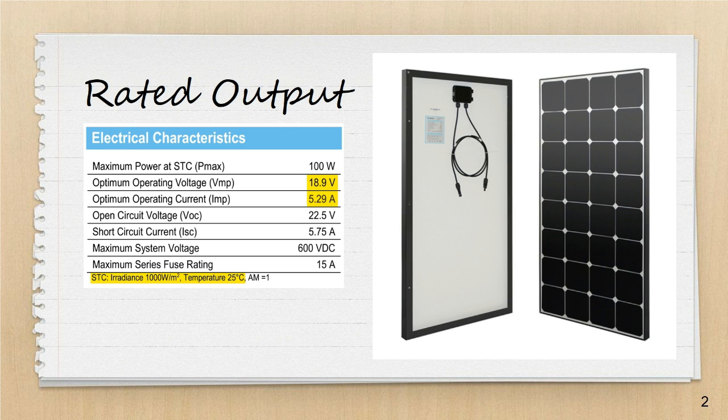For this example I've selected a Renogy 100 watt solar panel. Solar panel ratings are given under standard test conditions. The light source is calibrated to deliver 1000 watts per meter squared onto the surface of the panel and the surrounding ambient temperature is kept at 25 degrees C. From previous calculations we know that taking the volts times the amps equals the watts. So if we use the optimum operating voltage 18.9 and multiply that by the operating current 5.29 we get 100 watts. The rating of the panel is based on one hour at standard test conditions.